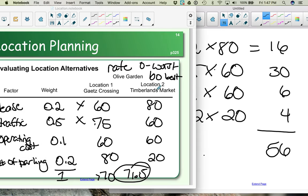Notice that Timberlands Market got a 56. If Gates Crossing was also that low, we would scrap both options and look somewhere else. But because Gates Crossing is the highest of the two numbers and past our minimum threshold, we would choose Gates Crossing as the new location for our Olive Garden.